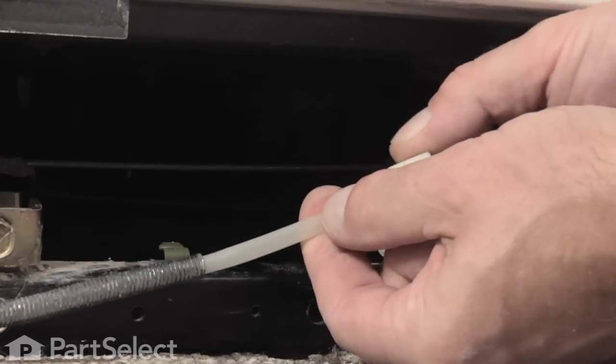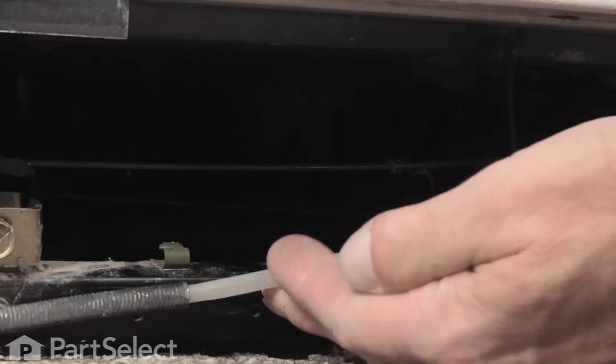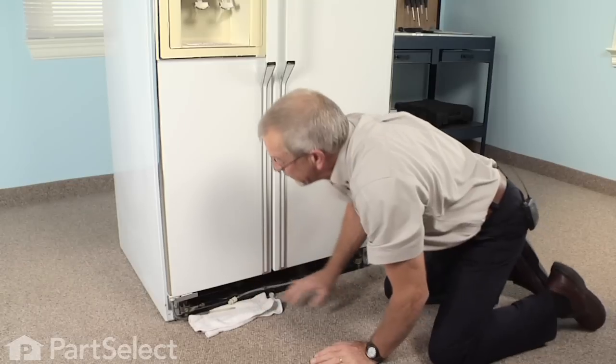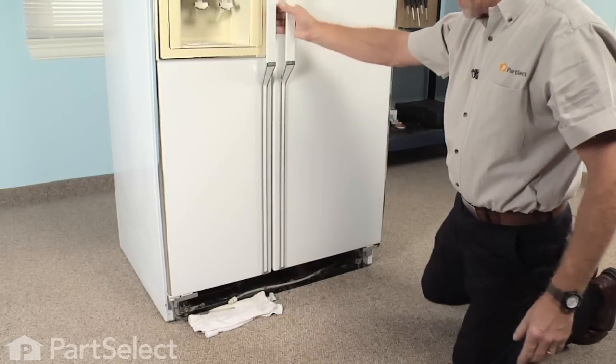slide the nut off the end of the tubing, and now we're ready to take the harness off the top of the door.